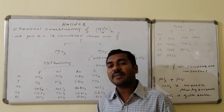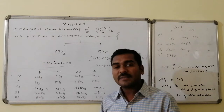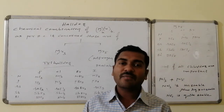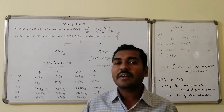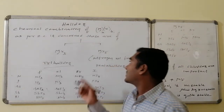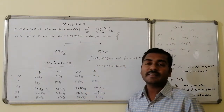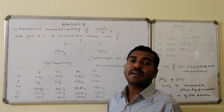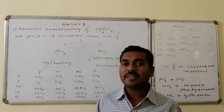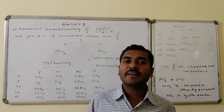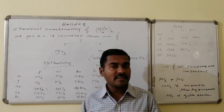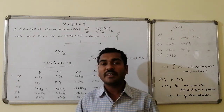In the same way, in case of the plus 5 oxidation state, the 5A group element can form 5 sigma bonds. Five are possible with five halogen atoms. Hence MX5, that is pentahalides and trihalides, are possible. As you know, nitrogen does not have any kind of d-orbitals. It just forms trihalides and does not form any kind of pentahalides.